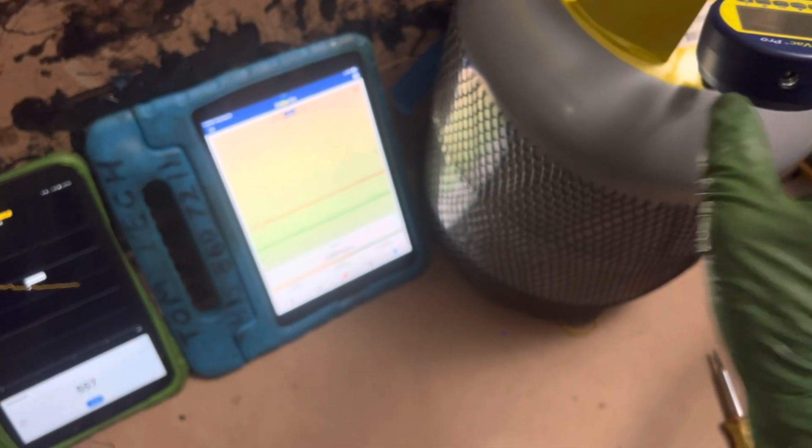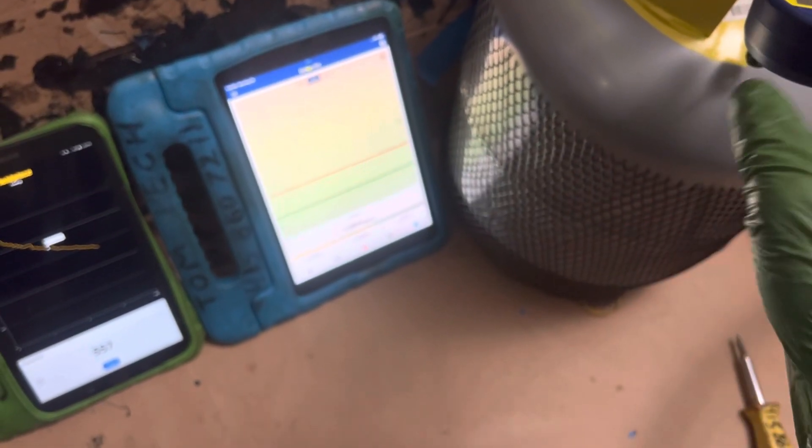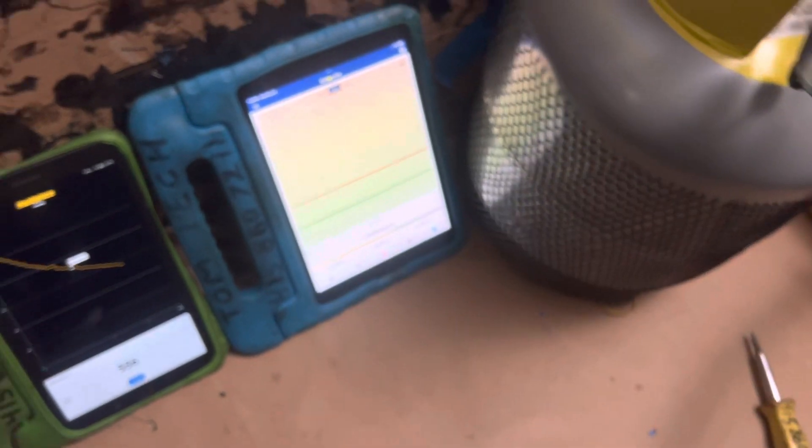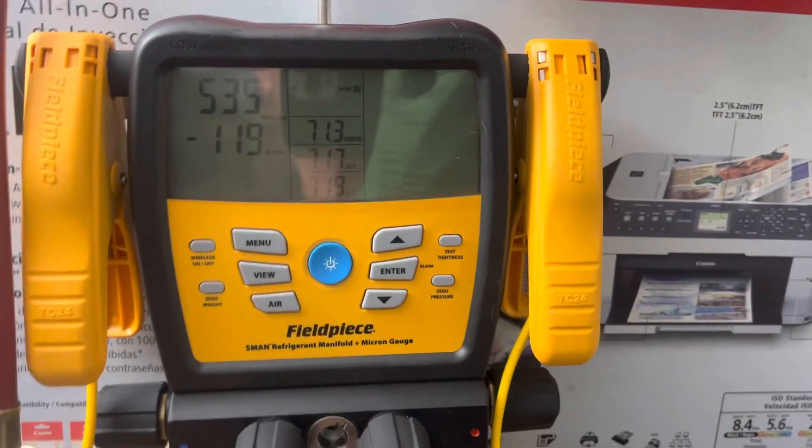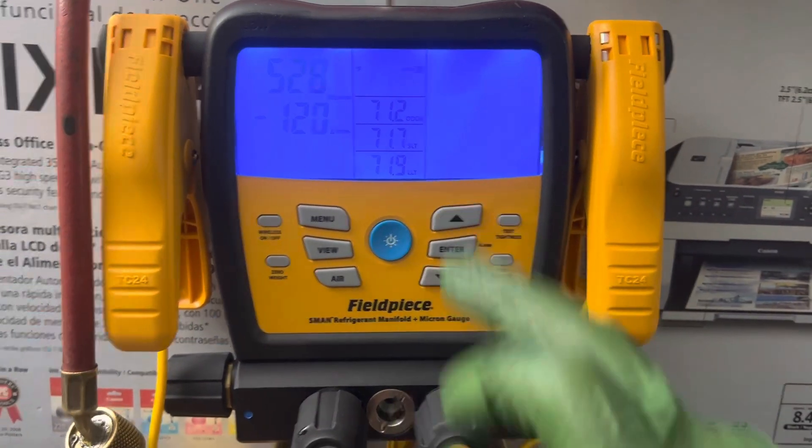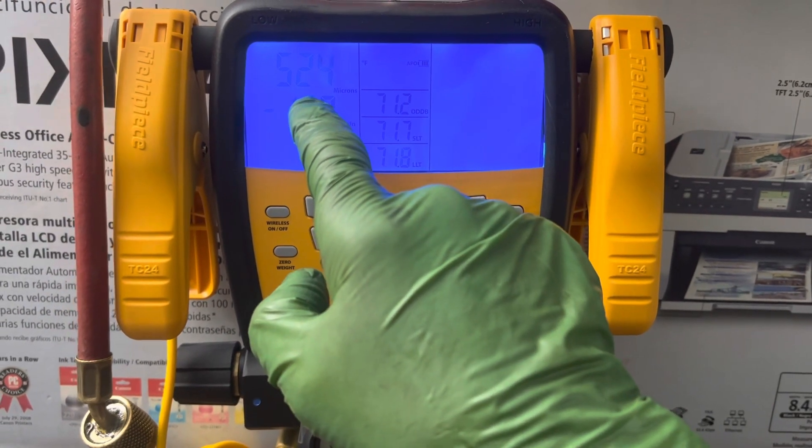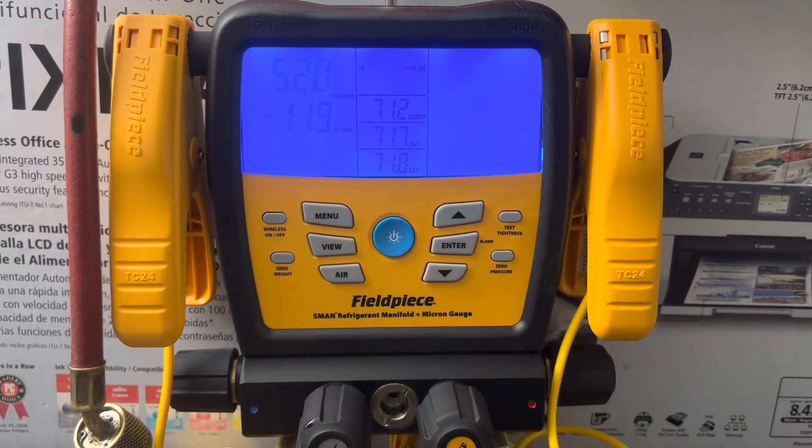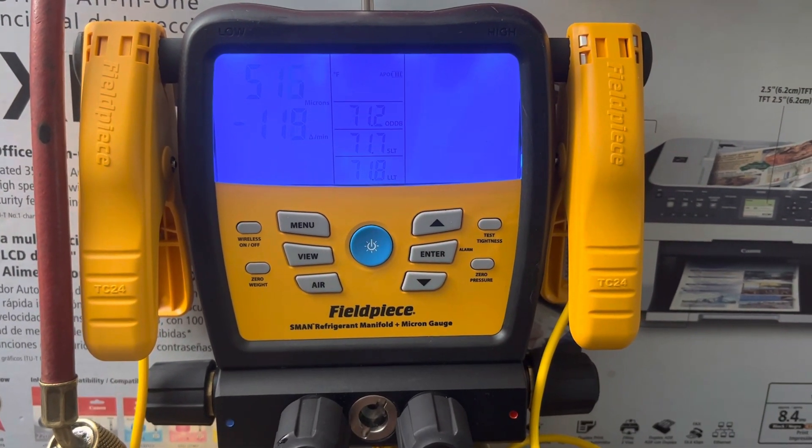This is the software for the BluVac. The software is all free when you buy the units because it's the only way for it to work, to work with the unit that it was developed to work with. And we have our FieldPiece, and we'll come back to this. All right guys, I'll see you. As you can see, we're approaching 500 microns here.